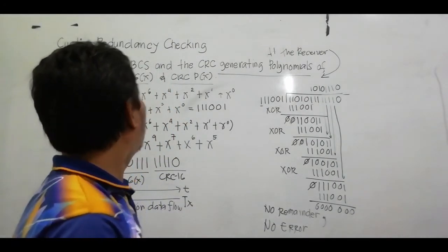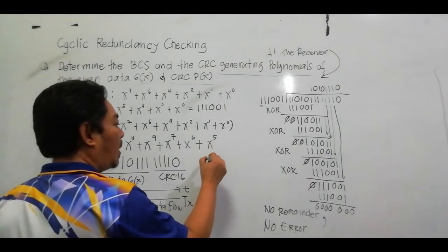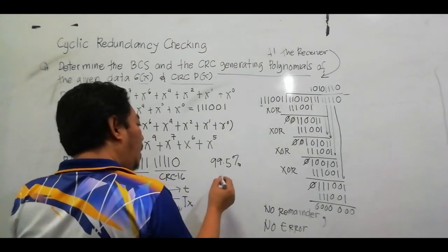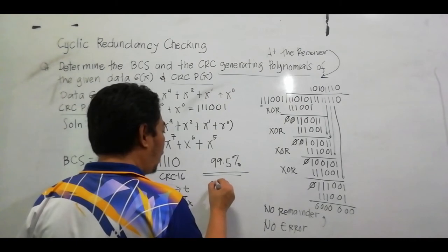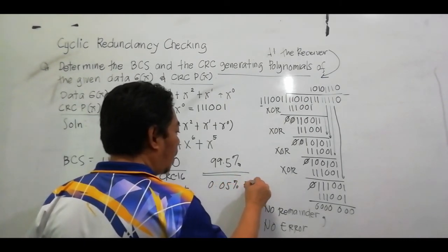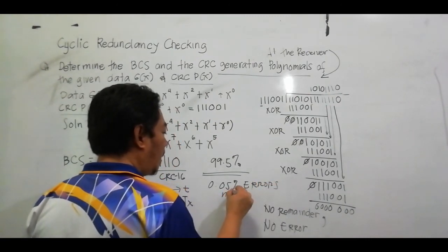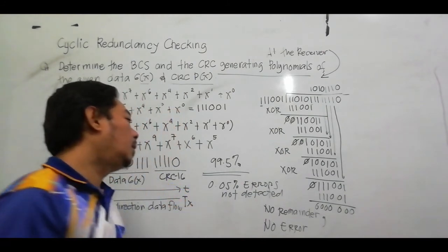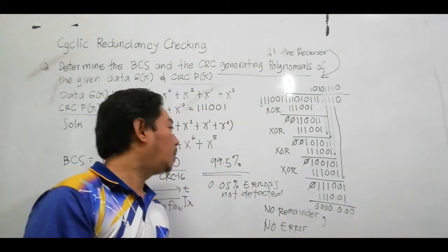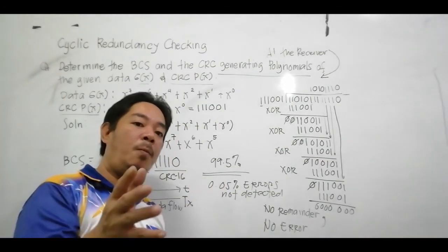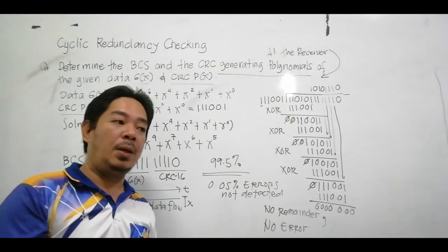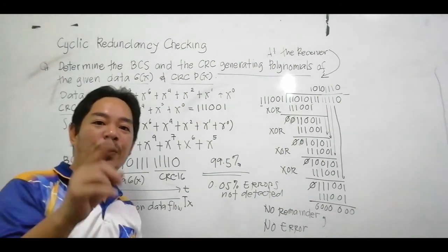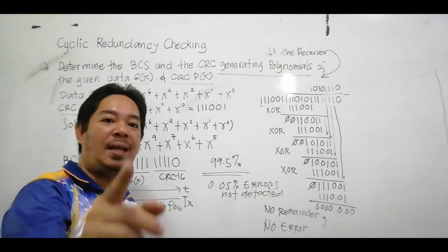That is what we call Cyclic Redundancy Checking. CRC is almost 99.5% accurate in error detection — only 0.05% of errors will not be detected. I hope you understand the discussion through this video. You can comment below for your questions. Good day and God bless us all. Don't forget to hit like and subscribe to our channel.